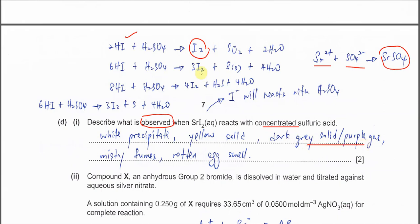Rotten egg smell is the H2S, or misty fumes. Misty fumes is the SO2. Another one is yellow solid - the sulfur. So you can see all these products.